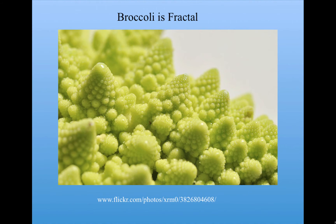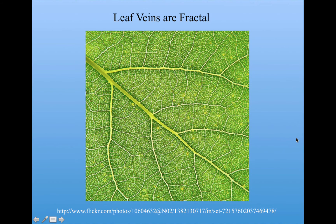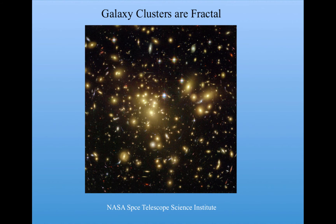Here's a picture of a special kind of broccoli that has fractal properties. You can see that each of these little broccoli mounds consists of other little mounds that themselves have the same structure, and so on. Leaf veins are fractal in the same way that trees are fractal. Galaxy clusters can be fractal — this is actually a cluster of clusters, and if I looked at one of those clusters, that itself would be a cluster, and so on.